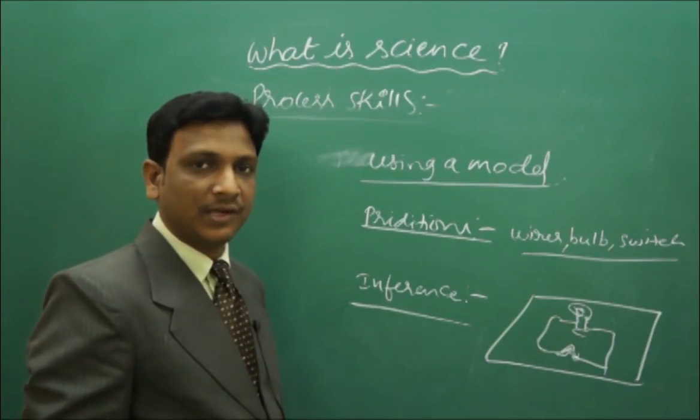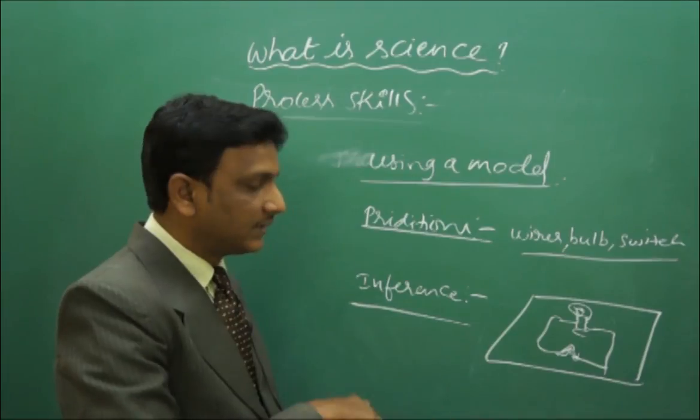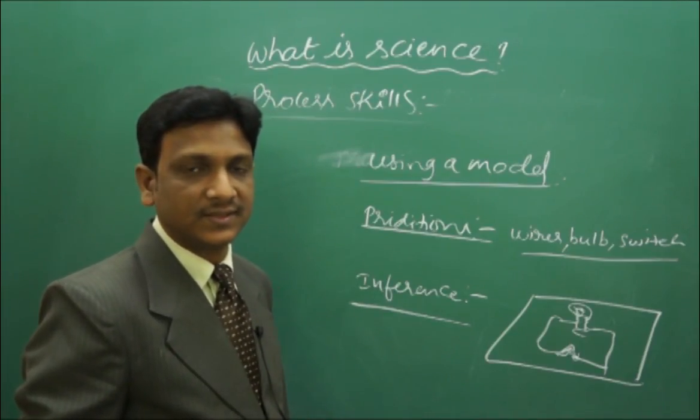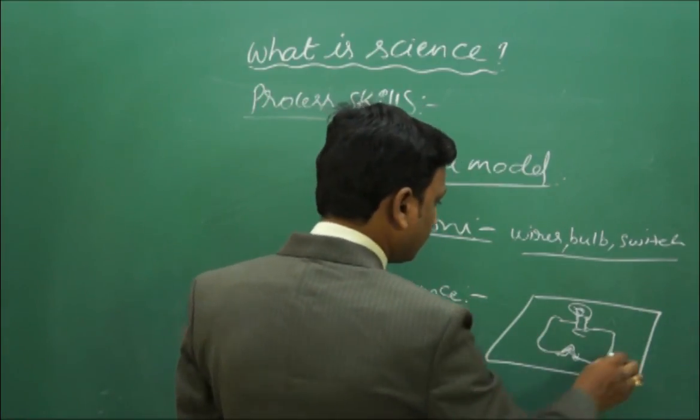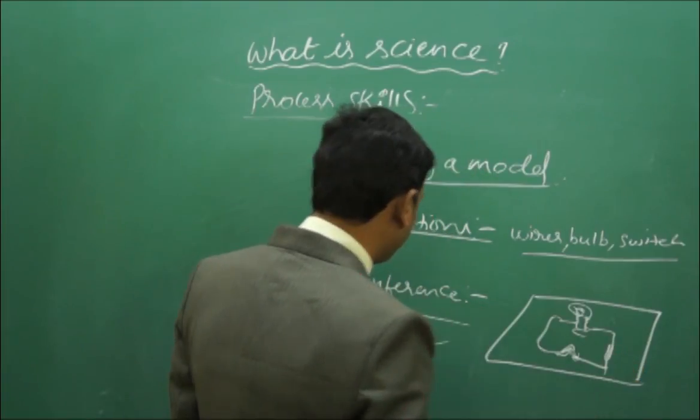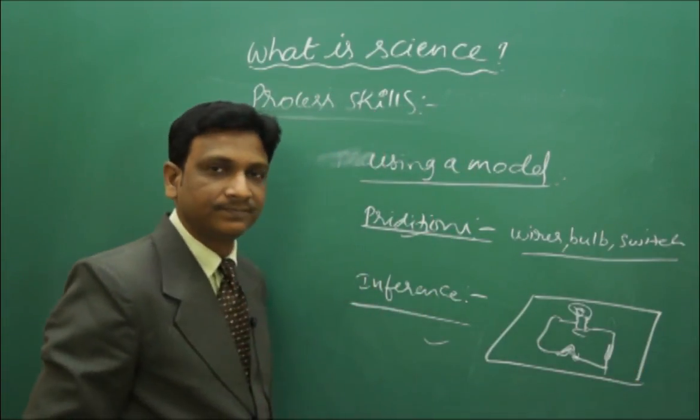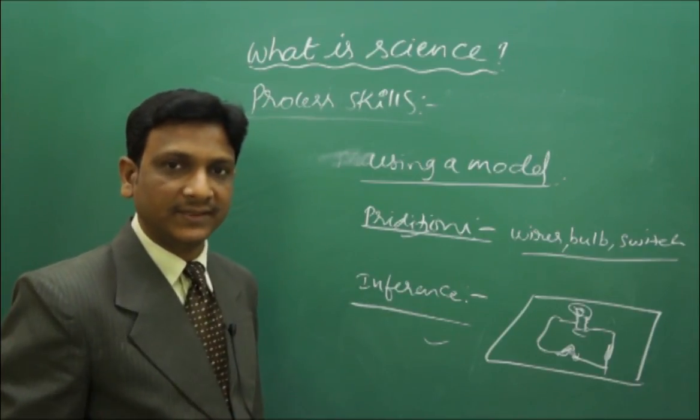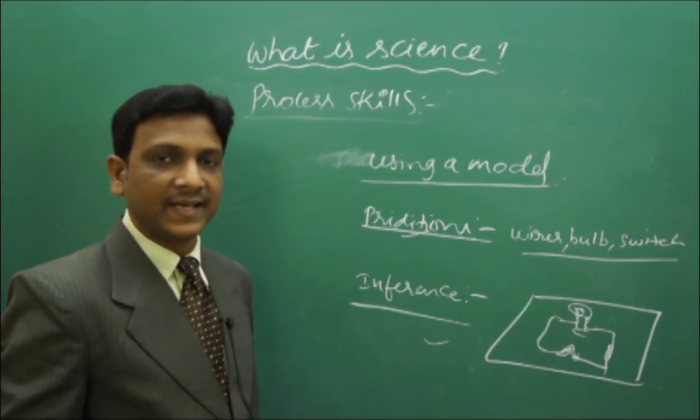That is to prove that only when there is a connection, then the flow of electricity takes place. That is the idea, that is the inference. Prediction means it is a guessing, guessing of final outcome. How can you guess? Our guessing is based on our experience, previous experiences.